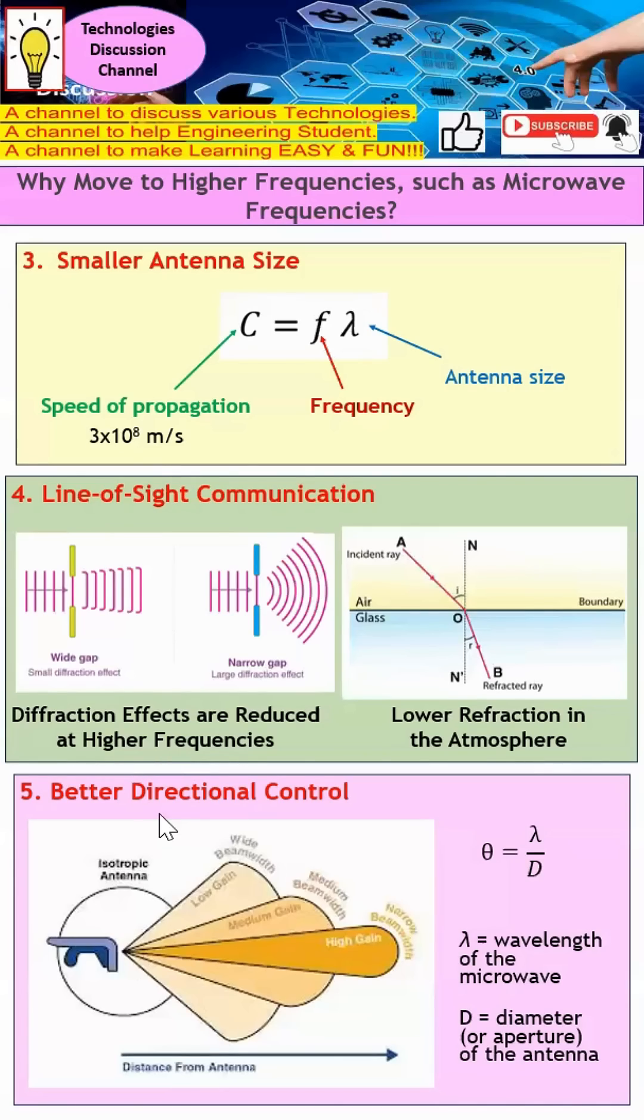Reason number five is we have better directional control. Let's take a look at this equation. You can see this is the beamwidth of the waveform that is released by the antenna.